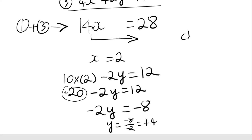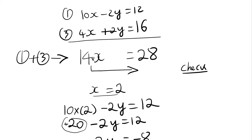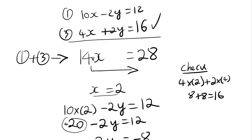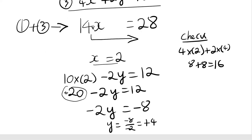To check if my solutions are correct, I can substitute x equals 2 and y equals 4 back into equation 3. So: 4 times 2 plus 2 times 4 gives me 8 plus 8, which is 16, and that is indeed what we had. So our final answers are x equals 2 and y equals 4. We could also substitute these values back in to find the dimensions of the original shapes.